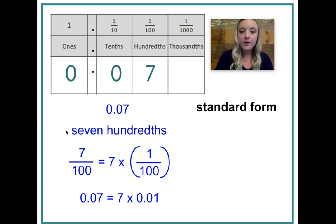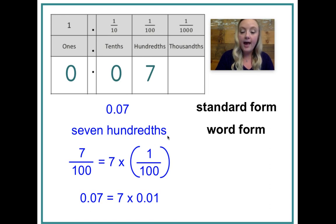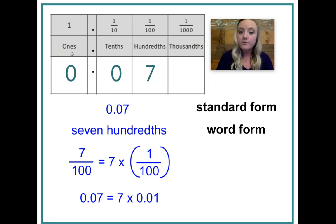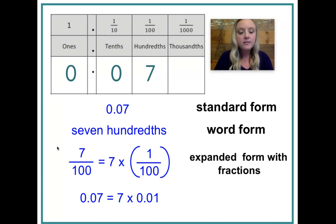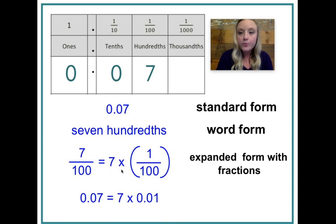We see seven hundredths represented in word form. When you are writing out decimals in word form, be careful to make sure that you do have that -THS at the end. That helps distinguish decimals from whole numbers. Next is something that might be a little new: expanded form, but using it with fractions and multiplication. Multiplication is just a grouping of things, so if I have seven one-hundredths, that's just seven groups of one one-hundredth.